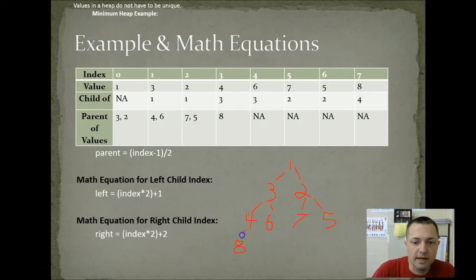This is a minimum heap. Every value is smaller than its children. So, 1 is smaller than 3 and 2. 3 is smaller than 4 and 6. 2 is smaller than 7 and 5. 4 is smaller than 8. And as you work your way across the tree, this is index 0, 1, 2, 3, 4, 5, 6, 7. So, these are where the values are in the ArrayList.